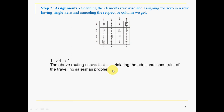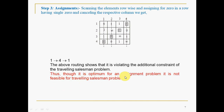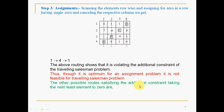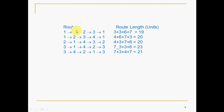The above routing violates the additional constraint of the TSP. Though it is optimum for an assignment problem, it is not feasible for the Traveling Salesman Problem. In this case, the approach is to search for the next least element — that is, the element next to zero — and try to form different routes using trial and error. You form possible routes with the next least elements only; don't go beyond the next least.